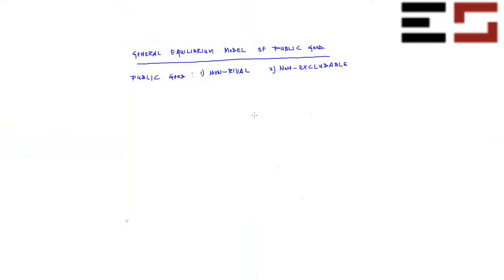So the simplest model is one in which there are two consumers. So why do we need two consumers? Because if you have just one consumer, then there is no difference between a public good and a private good — it's just one person. So you need at least two people to call it a public good. Let's call them one and two.